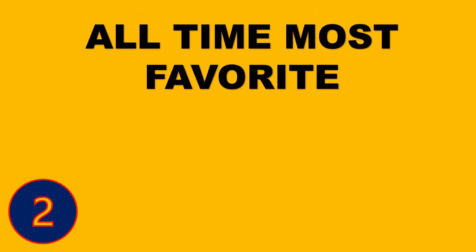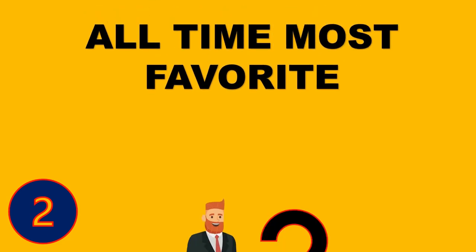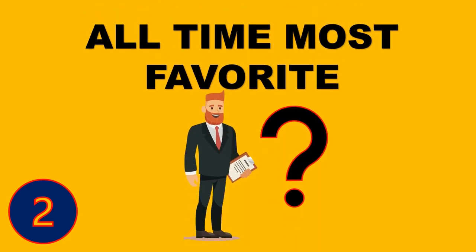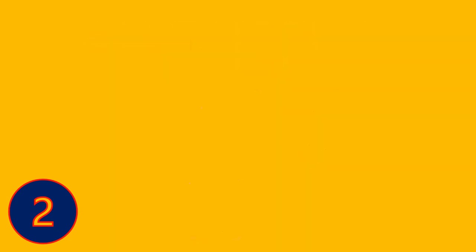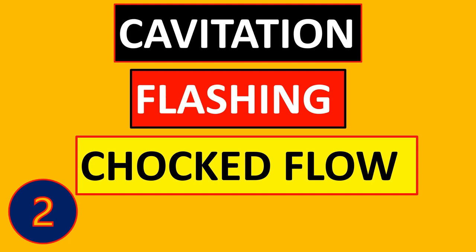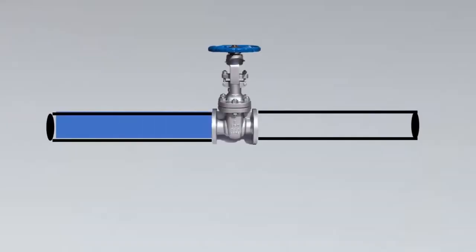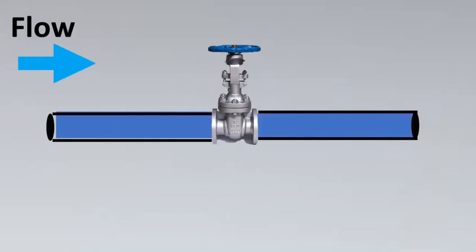The most asked question — the all-time favorite of any interviewer, asked over the last three decades — is: what is cavitation, flashing, and choked flow? Use the graph shown now to give a more convincing answer and aid your explanation. Imagine this is your valve put in a line. With the flow there is some restriction, so you will have a differential pressure (DP) created. The upstream pressure is P1 and the downstream pressure is P2. Now imagine this is your vapor pressure curve.